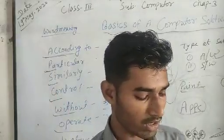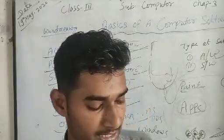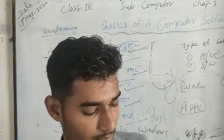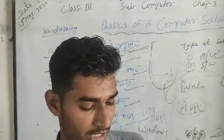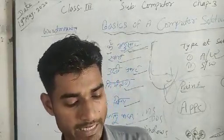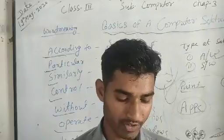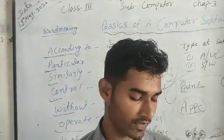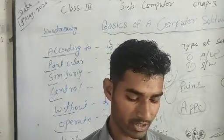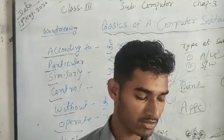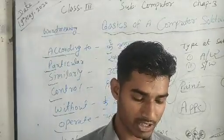Question 2: Which one of these is the latest operating system? Options: (A) Windows 7, (B) Windows Vista, (C) Windows Server, (D) Windows XP. The answer is Windows 7.